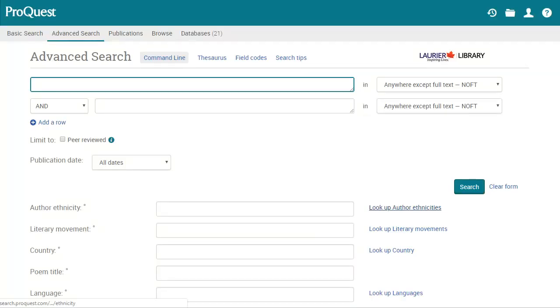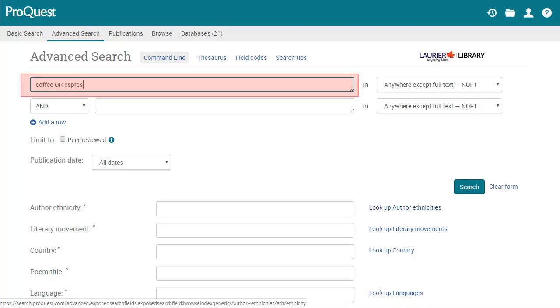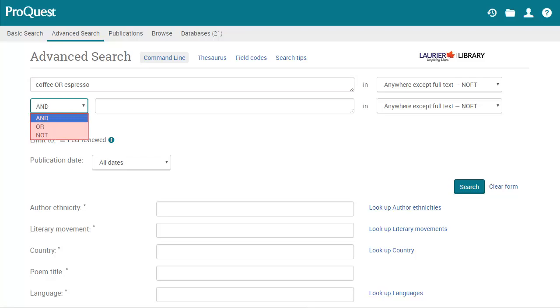Most databases let you combine multiple operators in one search. I'll show you how it works in ProQuest. Here I'll enter coffee or espresso in the first box to indicate I want anything that mentions either coffee or espresso. Then I'll choose NOT from the dropdown menu beside the next row of search boxes. Finally, I'll type BEANS in the search box beside the NOT to exclude anything that has the term BEANS. Each of the search results will contain either the term coffee or the term espresso. None of them should contain the term BEANS.